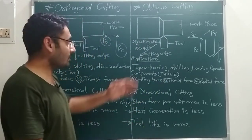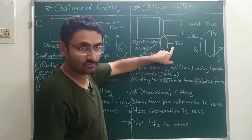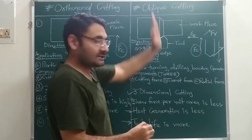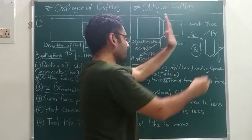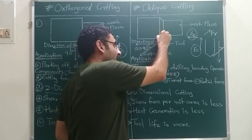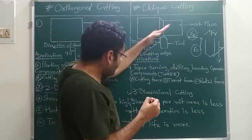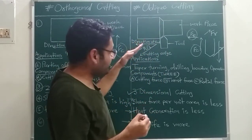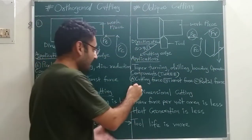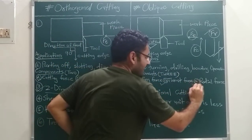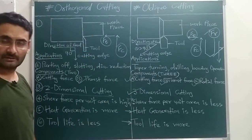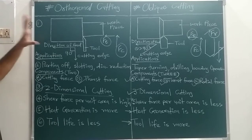Oblique cutting is known as three-dimensional cutting because the force acting on the tool has three components. The first is the cutting force, the second is the thrust force perpendicular to the cutting force, and the third is the radial force — which acts due to the inclination of the cutting edge. Since there are three force components, oblique cutting is called three-dimensional cutting.